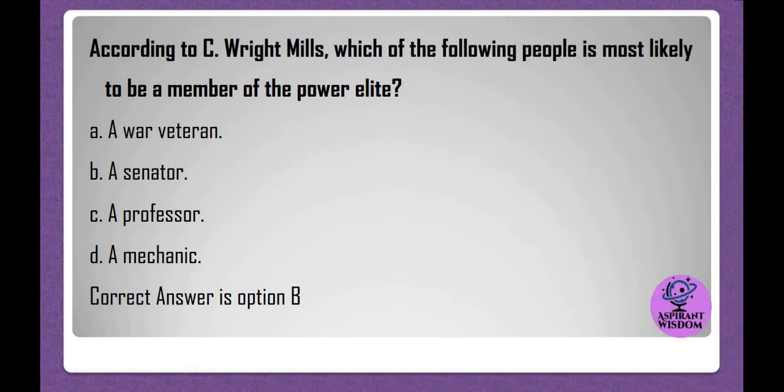According to C. Wright Mills, which of the following people is most likely to be a member of the power elite? A. A war veteran. B. A senator. C. A professor. D. A mechanic. Correct answer is option B.